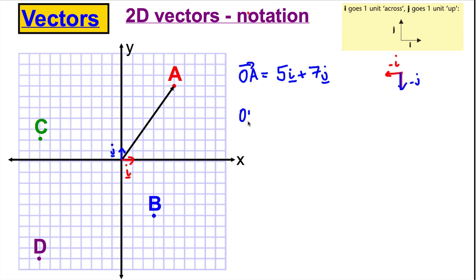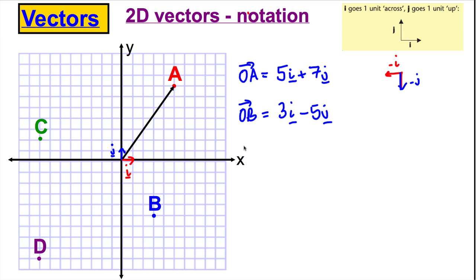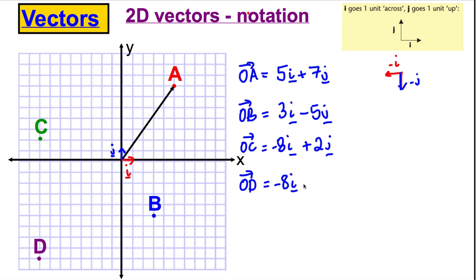How would I get from O to C? I'd go 8 left, so negative 8i, and 2 up, so plus 2j. And lastly, O to D — I would go negative 8i and negative 9j. So negative 8i subtract 9j. And that would be an accurate way of writing these vectors and how to get to them.